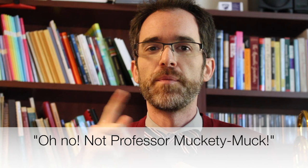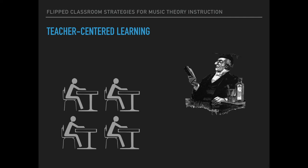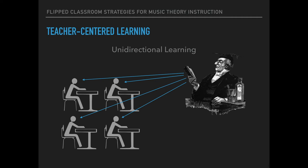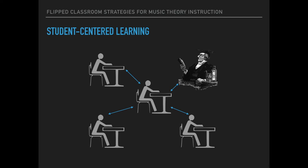In teacher-centered learning, the teacher and the students have a one-directional method of learning. The teacher provides information, and the students gather it and leave class. Typically they'll go home and try to apply that knowledge in some way. The basic premise of teacher-centered learning is a unidirectional form of learning. This is opposed to student-centered learning, which flips the direction. The student is now the center of the learning. The teacher acts as part of this interaction, but there's a network where other students are also participating in a bidirectional system where everyone is part of the learning process, not just the teacher providing information to the class.